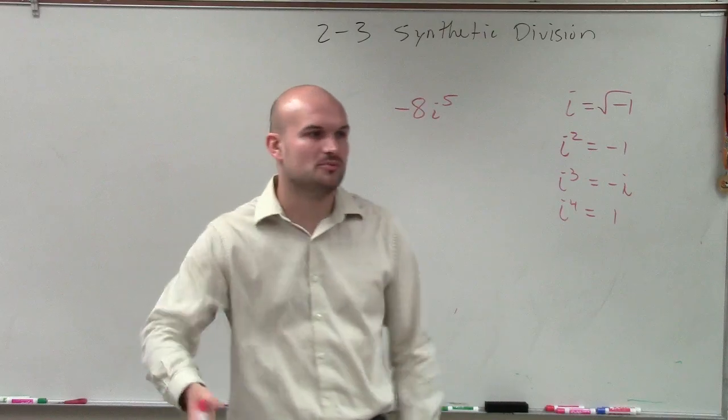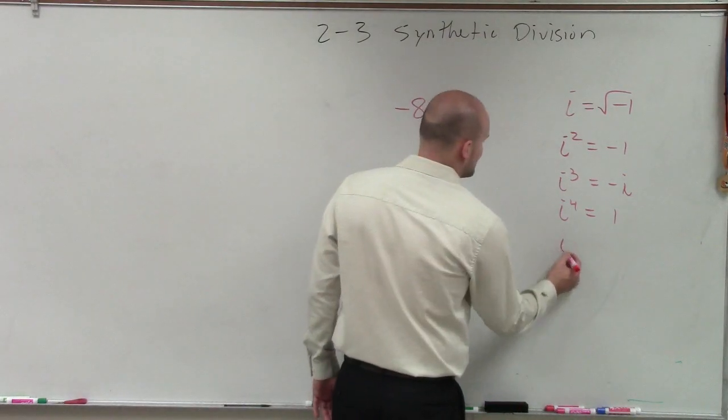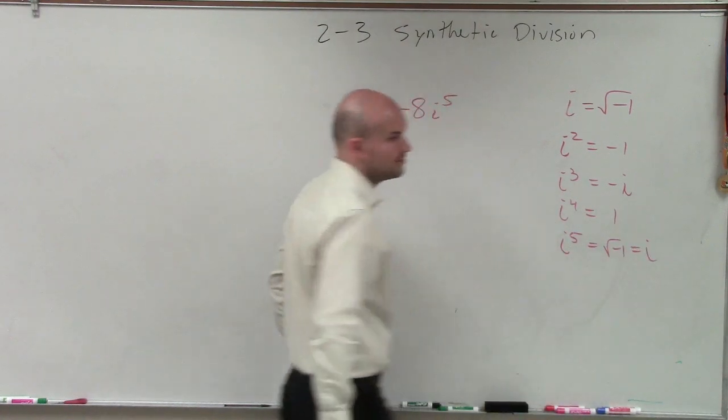But then what we did is we kept multiplying i on both sides and what we noticed is that i to the fifth was equal to the square root of negative 1 again, which is just equal to i.